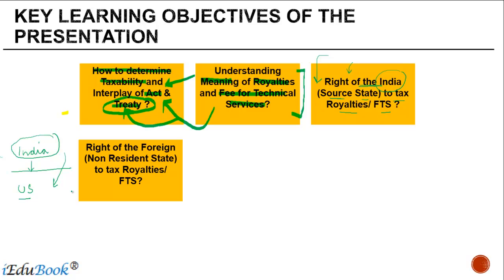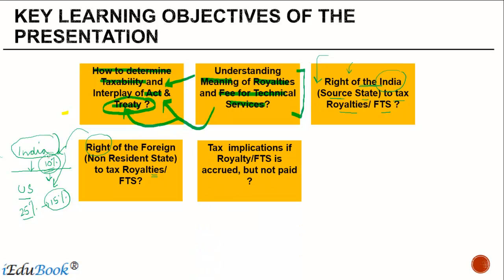The next question is what is the right of the US, or the foreign company's residence state, to tax royalties and FTS. Suppose India applies a withholding tax of 10% while making the payment to the US. The question is: can the US apply a tax rate of, say, 25% and collect the balance 15% from the company? Equally important is whether the US will give a credit for the taxes withheld in India. How this entire credit mechanism works is something we will look at in Article 23.